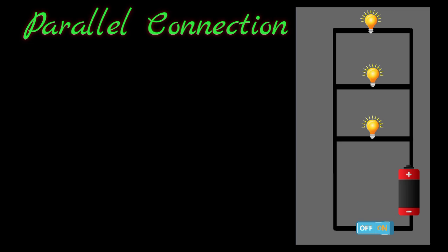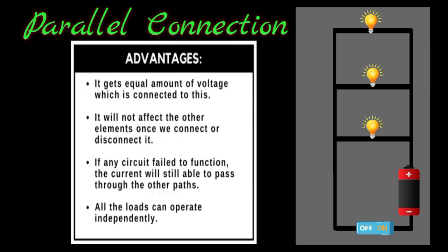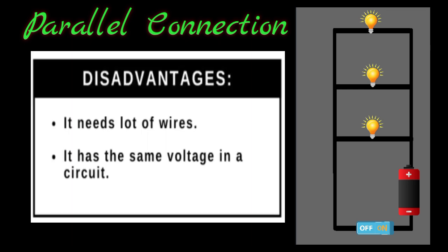While parallel circuit is a type of circuit that has more than one path for current to flow. The following are the advantages of a parallel connection: It gets equal amount of voltage which is connected to it. It will not affect the other elements once we connect or disconnect it. If any circuit fails to function, the current will still be able to pass through the other paths. All the loads can operate independently. Disadvantages? It needs a lot of wires. And it has the same voltage in a circuit.